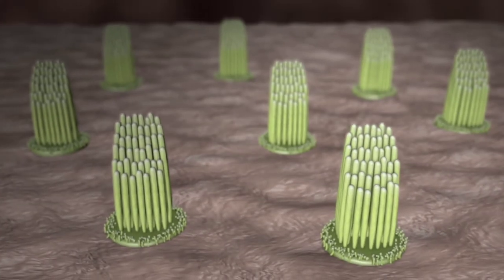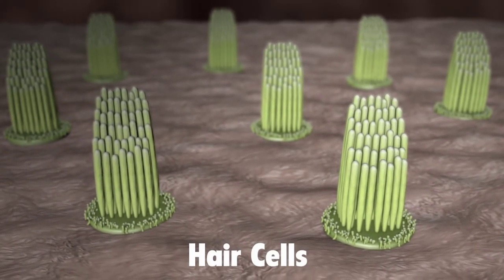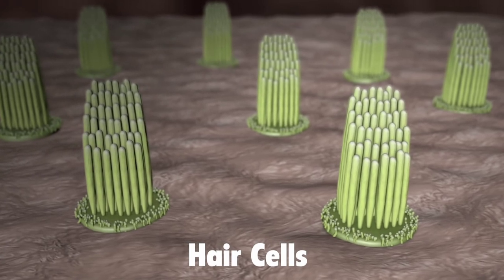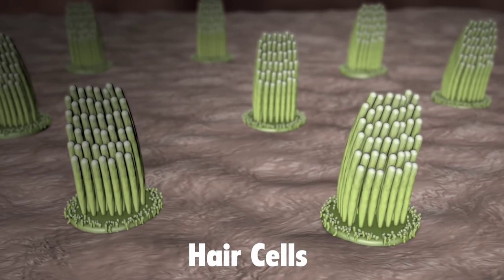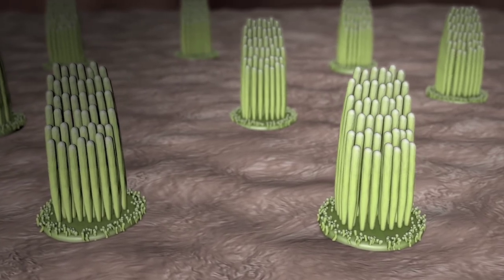Hair-like structures called stereocilia sit on top of hair cells and are grouped together as hair cell bundles inside the cochlea. The hair cells inside the cochlea ride these waves, and the hair bundles are moved.